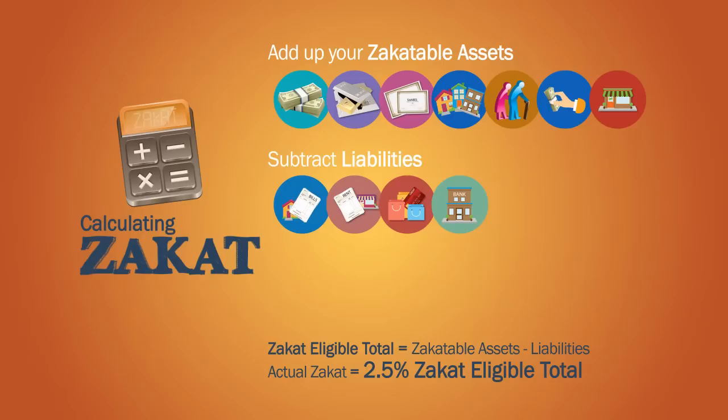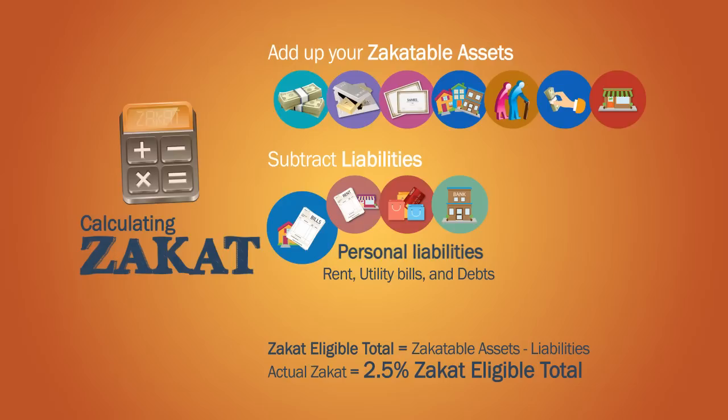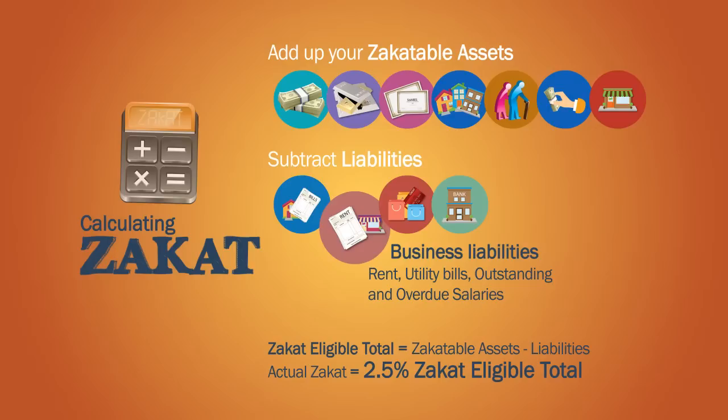Now we can subtract liabilities from the total of your zakatable assets. Personal liabilities, such as living expenses, including rent, utility bills and debts.